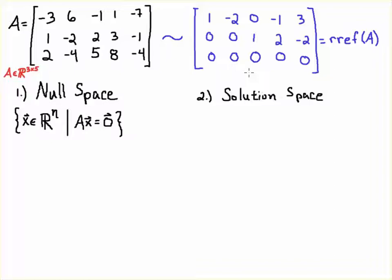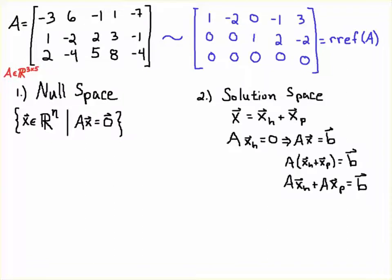Whenever you determine a null space, much like when you're finding a column space or row space, you reduce the matrix down to its RREF. I did that here — in this case I have a 3×5 matrix, so this matrix is an element of the vector space of 3×5 matrices with real entries, denoted A ∈ R^(3×5).